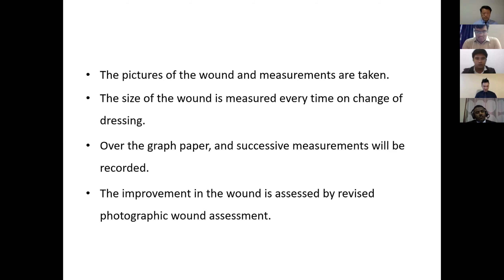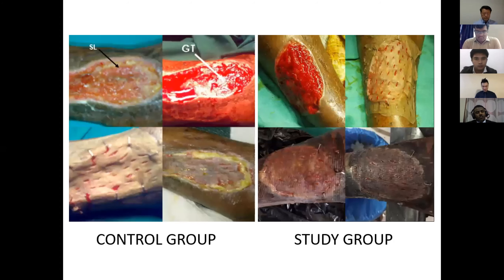The picture showing the control group on the left side is not as red compared to the study group. In the study group, where we used negative pressure wound therapy, the wound is very red, indicating that the rate of granulation tissue formation is higher, and the quality of the granulation tissue is also better.